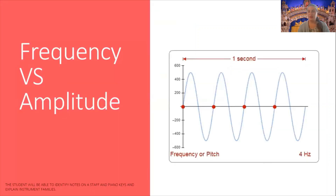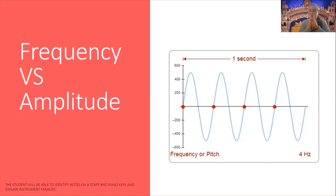Refresher from my last video: frequency versus amplitude. Remember amplitude is how high the wave is — that's the loudness, the dynamics — whereas frequency goes horizontally and that is the pitch, the how high or low the pitch is. Remember the closer together the waves, the higher the pitch; further apart, the lower the pitch. Higher waves mean louder; shorter waves mean quieter.